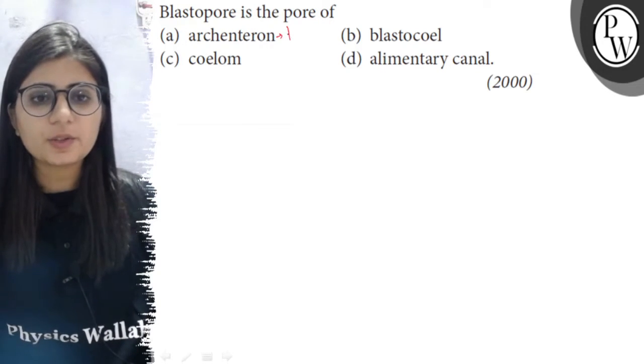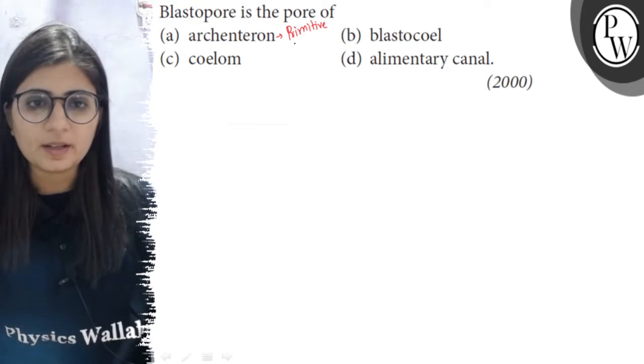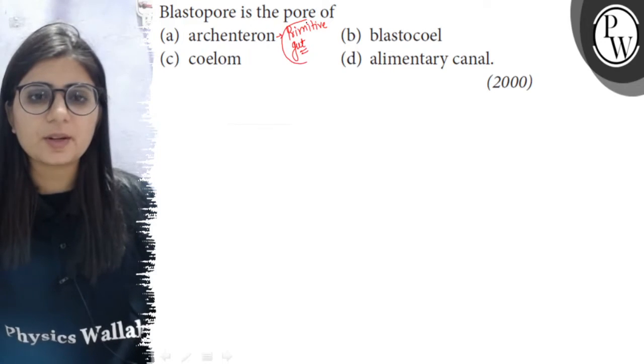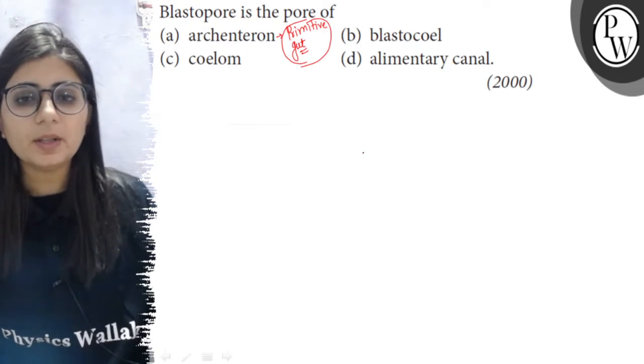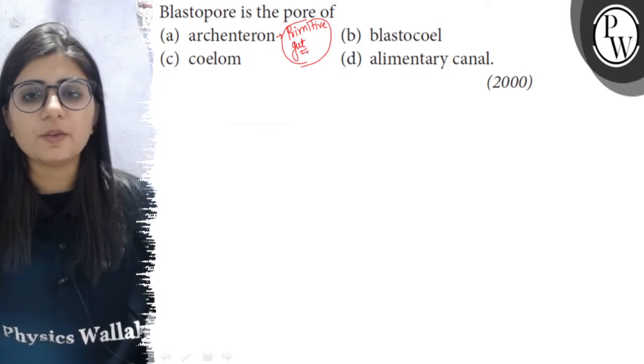Archenterone is also known as primitive gut. It is the embryonic gut. This structure will further form the alimentary canal. So this is called the primitive gut.